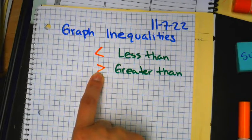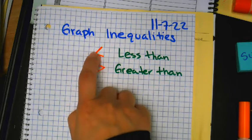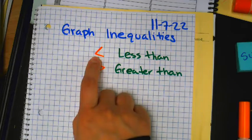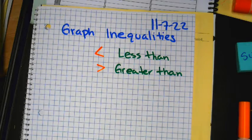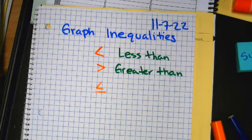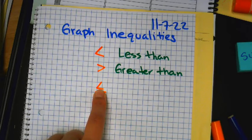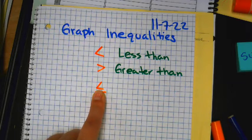What if they have a line under them? You need to understand that this one is less than because it looks like the L. This one — probably newer to some of you. What do you think that one is called? Less than or equal to — yeah, that's right.